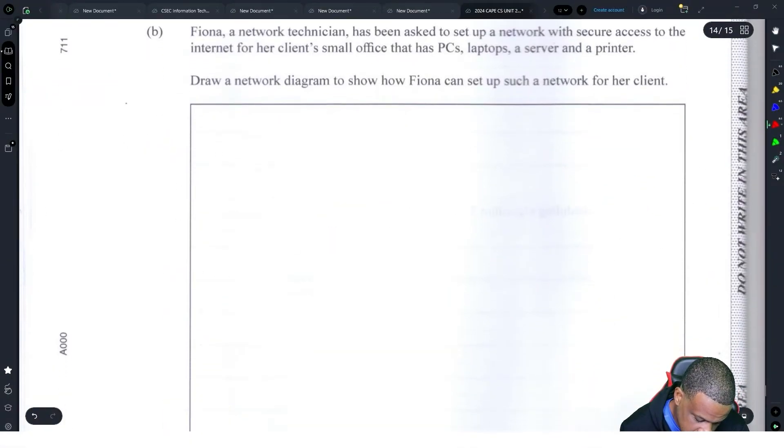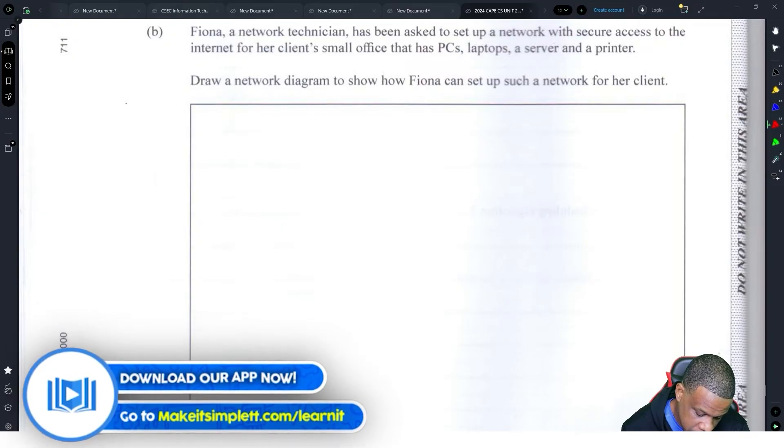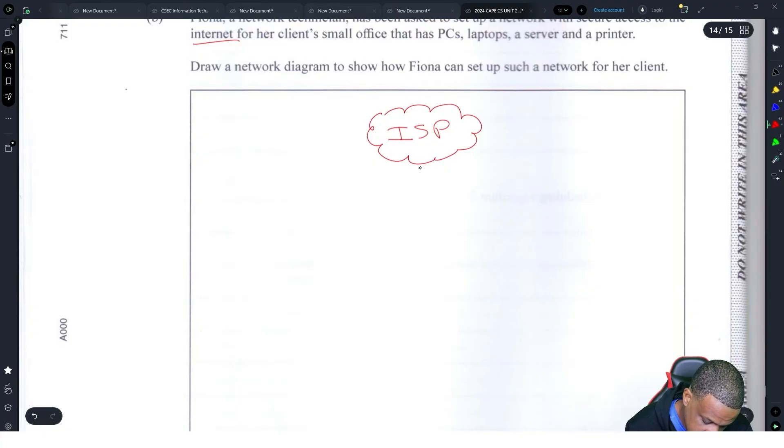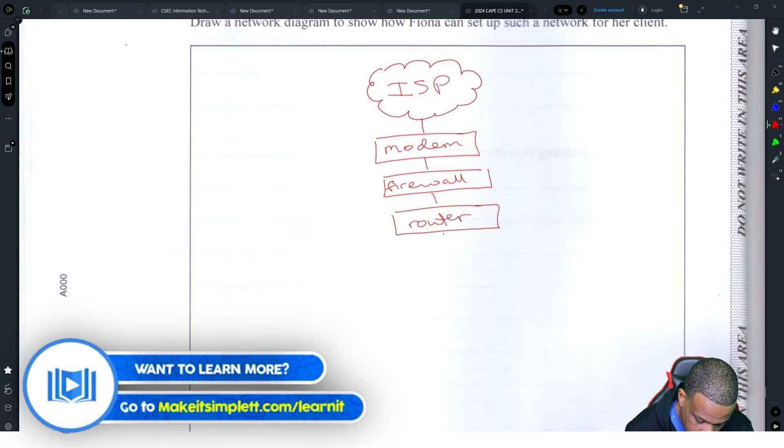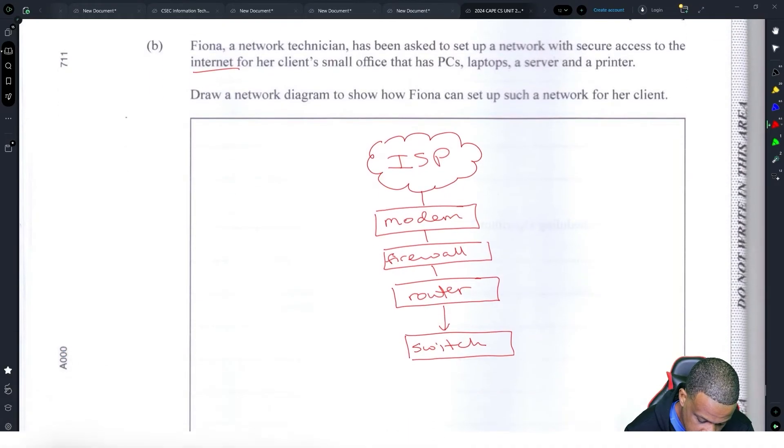The owner, a network technician, has been set up a network with secure access to the internet for her clients. Small office that has PCs, laptops, and printer. Draw a network diagram. Cake. Alright, so the first thing you have to do is you need to access the internet, so we have a cloud. We call that the ISP, the internet service provider. The internet service provider sends the information to a modem. The modem hits a firewall, the firewall hits a router.